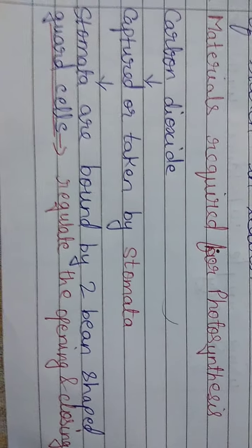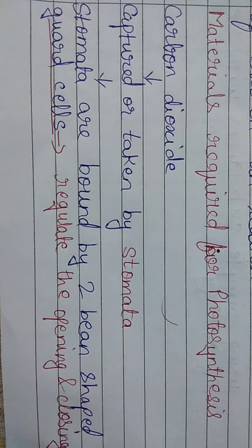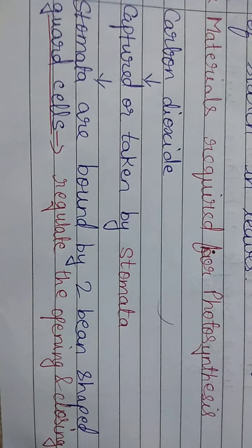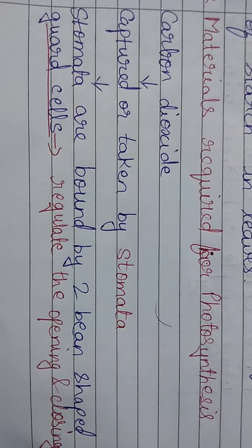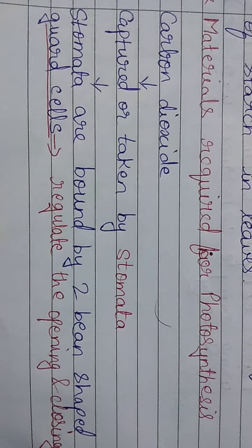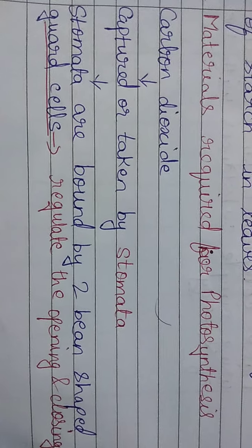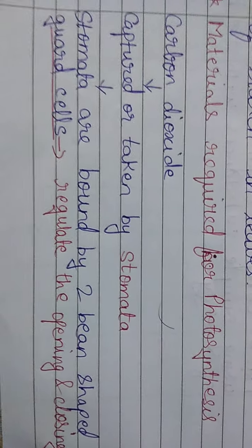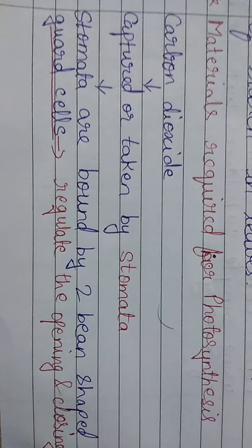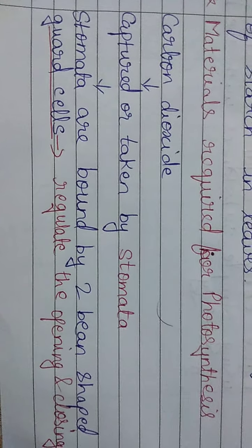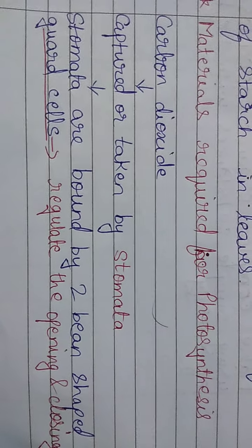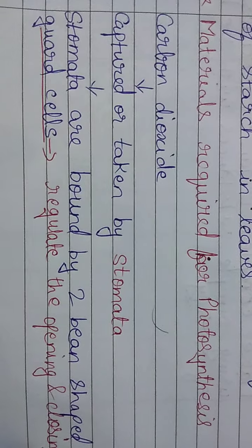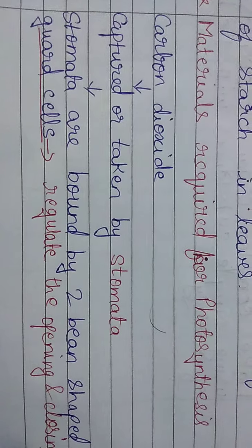Carbon dioxide is the most important material required for photosynthesis. Without carbon dioxide, photosynthesis will not take place. We can prove this by conducting a simple activity. Take two potted plants that are destarched — they should not contain starch. We then take potassium hydroxide, which has the ability to capture or absorb carbon dioxide, in a glass and watch glass, and keep it next to one of the plants.